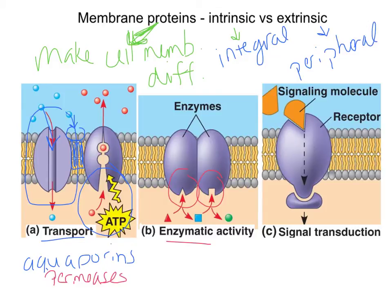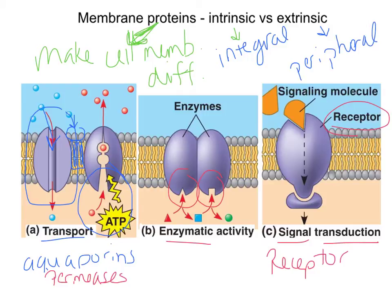We also have a large number of proteins that act as receptors for cell communication — what's called signal transduction. These receptor proteins are shape-specific for a particular substrate, like insulin. When insulin is present and binds to the receptor, that starts the chemical pathway that triggers the uptake of glucose from the blood. So proteins can also be receptor sites.